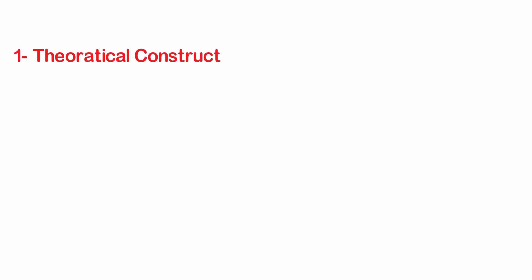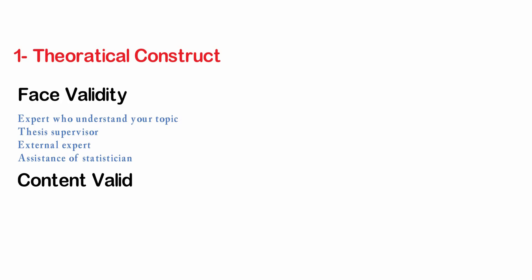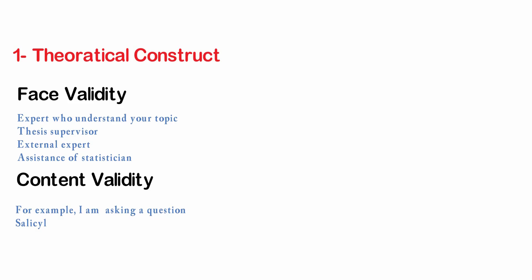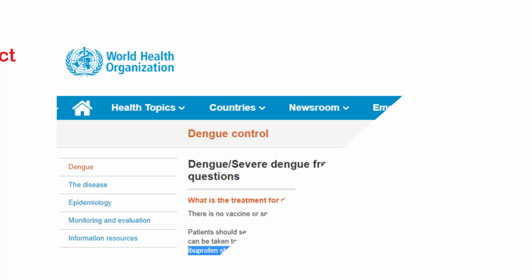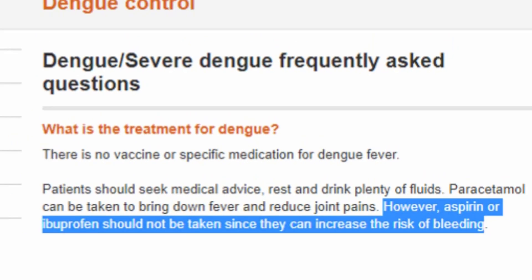Number one is the theoretical construct, which is further divided into face validity. Face validity means a person who is an expert on your topic goes through your research — this can be your supervisor, an external expert, or a statistician. Number two is content validity. For example, if I'm asking a question in the questionnaire that salicylic acid or aspirin is prohibited in dengue shock syndrome, I validate this question through literature review. For example, the World Health Organization states that aspirin and ibuprofen are prohibited because of the risk of bleeding.